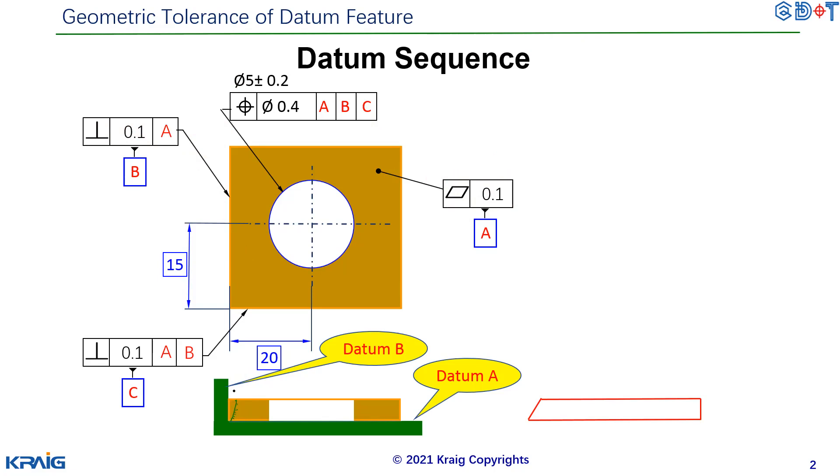What's the maximum? 0.1 here. Something like this. It's allowed to tilt from here to here, 0.1.